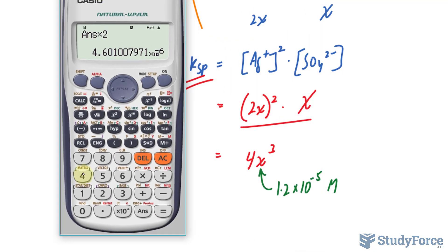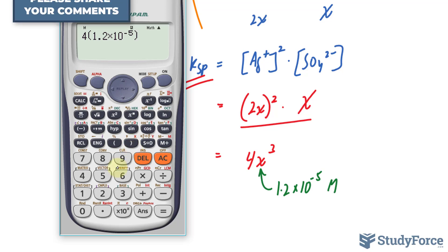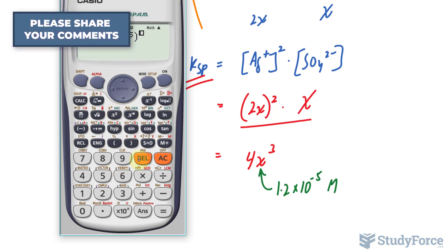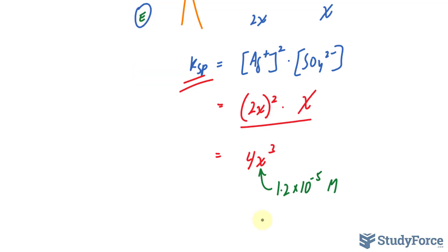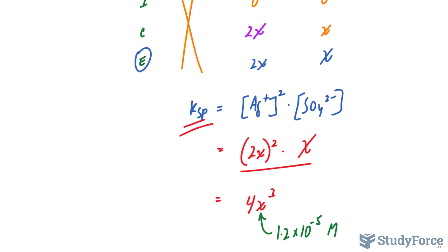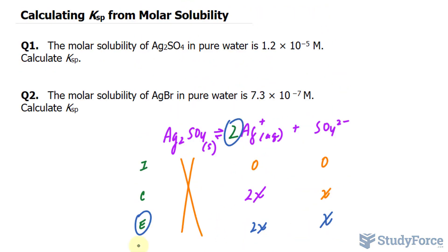Let's go ahead and do that. Let's say that 4 times 1.2 times 10 raised to the power of negative 5, and that is being raised to the power of 3. Our Ksp at this molarity is 6.912 times 10 to the power of negative 15. Of course, we need this to two significant figures, so we'll say 6.9 times 10 to the power of negative 15 is the Ksp for silver sulfate.